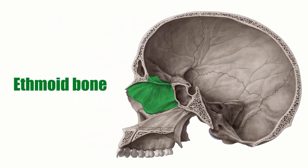Hello, once again it's Matt from Kenhub, and in this tutorial we will be talking about the ethmoid bone. The ethmoid bone is a singular porous bone that makes up the middle area of the viscerocranium and forms the mid-facial region of the skull.